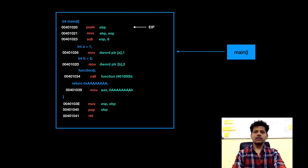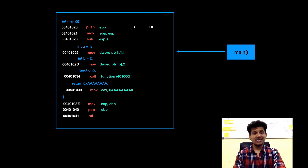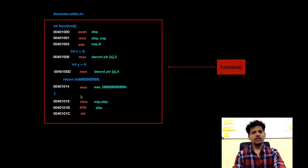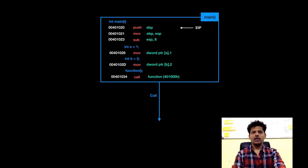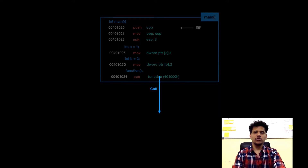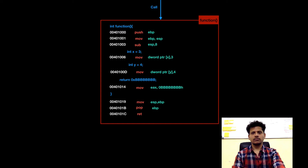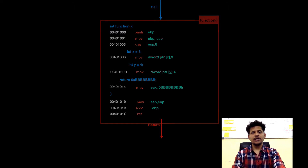This is our assembly code. This is assembly and C code for main, and this is our assembly and C code for function. Let's look at the program flowchart. Main is calling function, and function is returning to the main.